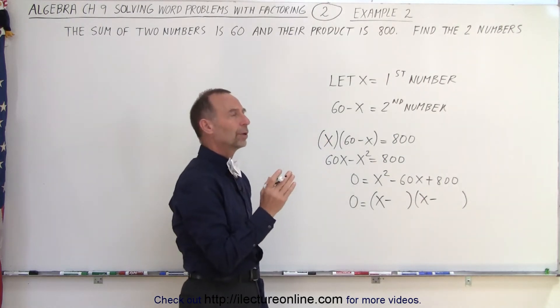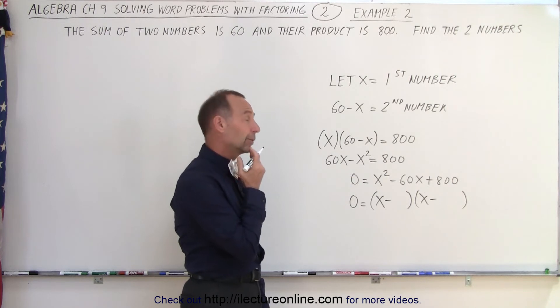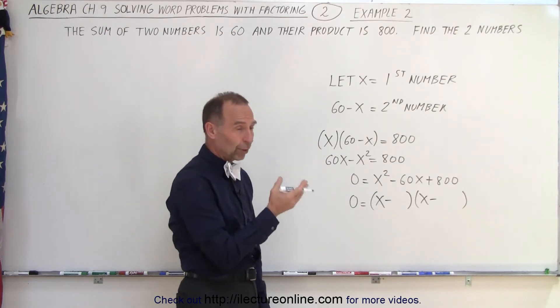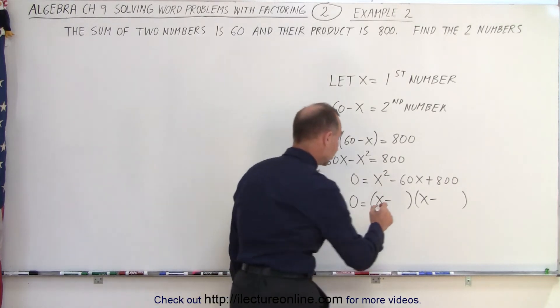So two numbers, when I multiply I get 800, when I add I get minus 60. Well, 20 and 40 come to mind, because 20 plus 40 is 60, and 20 times 40 is 800. So that looks like it works.